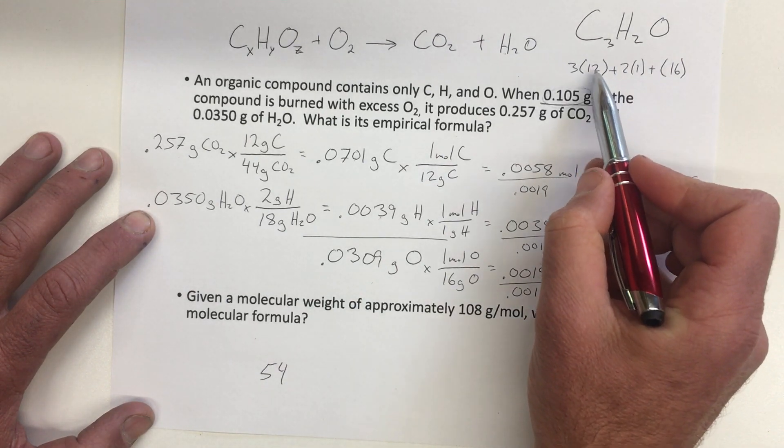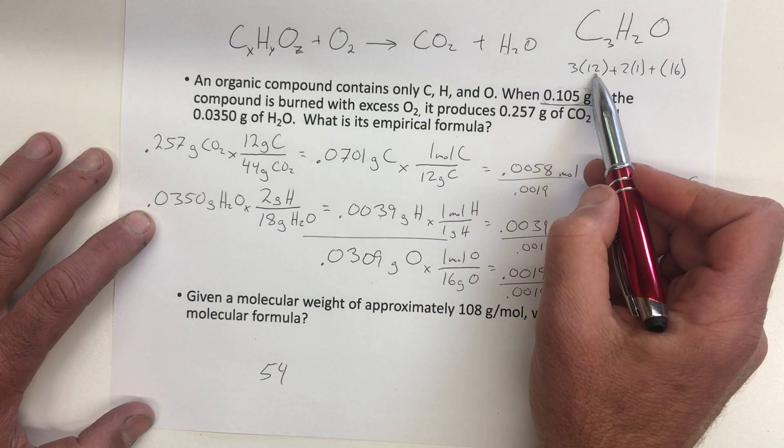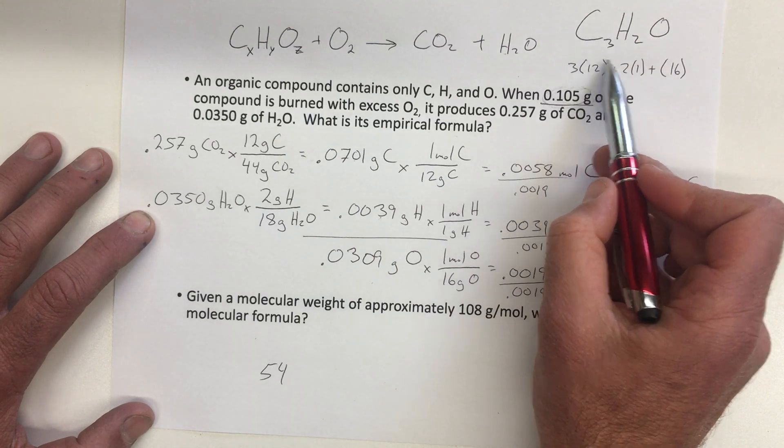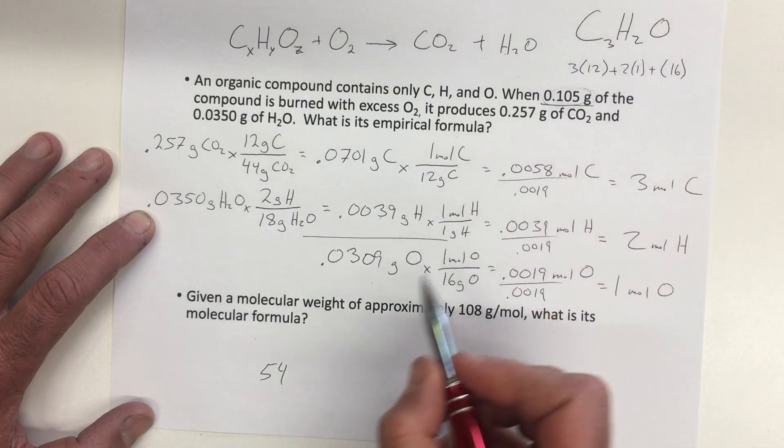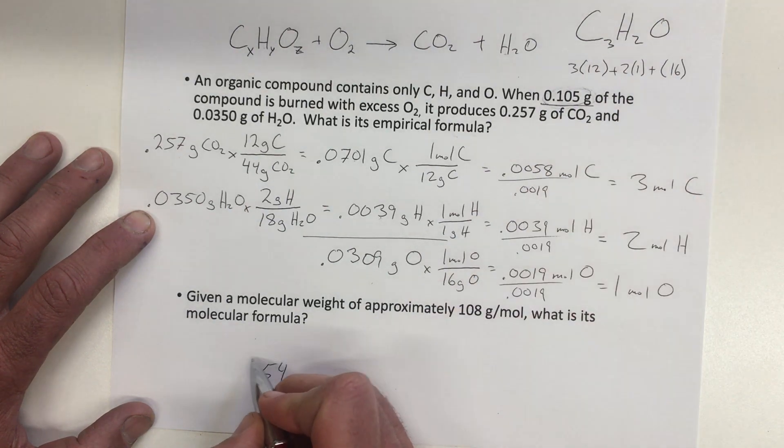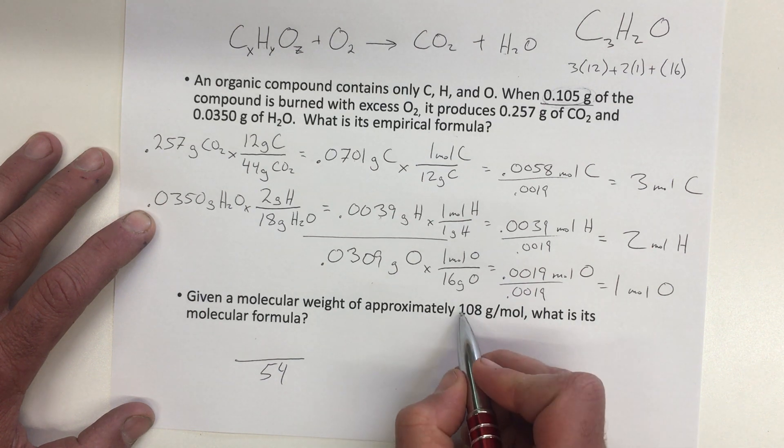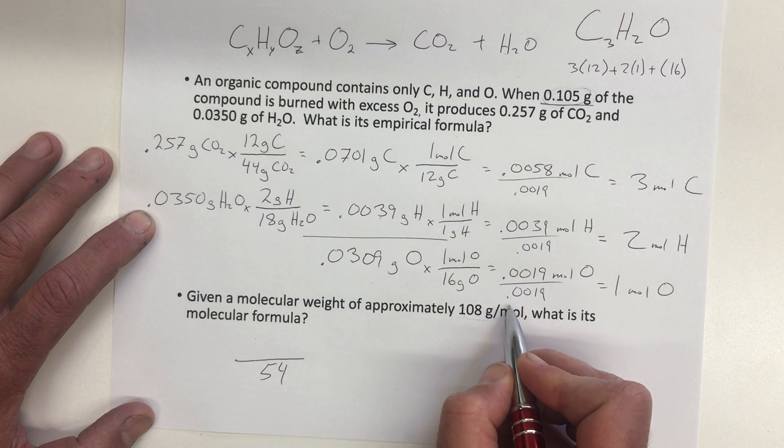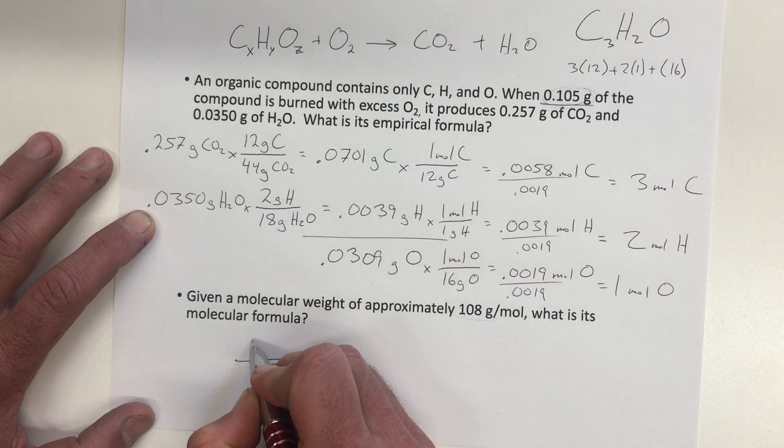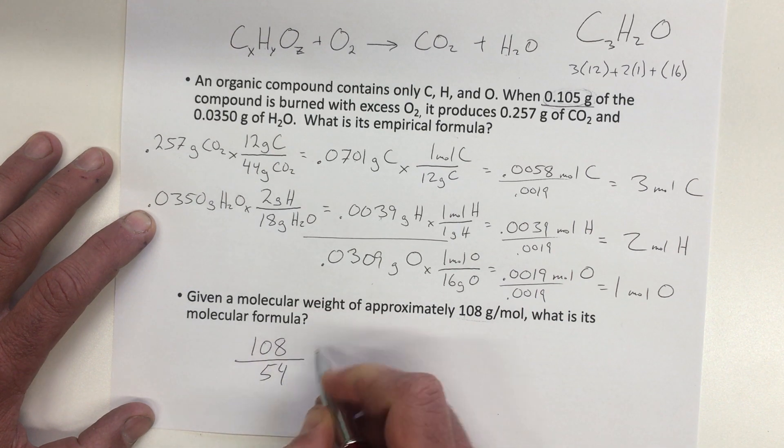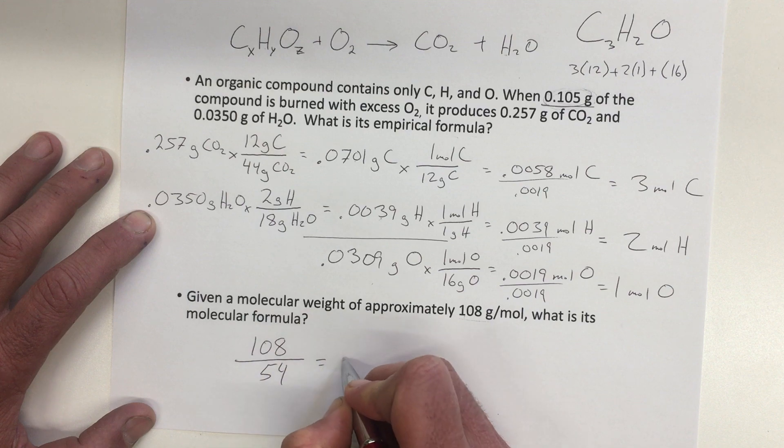So 54 is the mass of just one of these, one of these hydrocarbons, or one of these empirical formulas. And we're going to divide that by the mass of the, sorry, the molecular weight, or the molar mass of the whole compound. So 108 divided by 54, that gives us about 2.